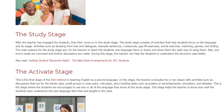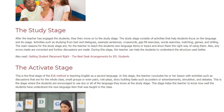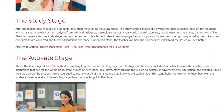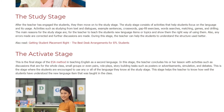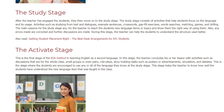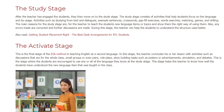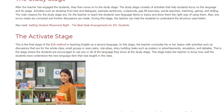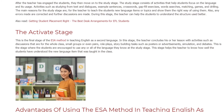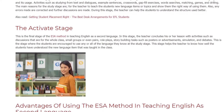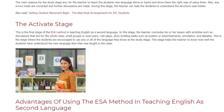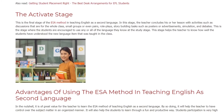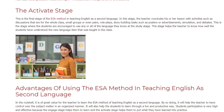During the Study stage, the teacher can help students understand the structure used better. The Activate stage is the final stage of the ESA method in teaching English as a second language. In this stage, the teacher concludes the lesson with activities such as discussions for the whole class, small groups, or pairs, role plays, story building, tasks such as posters or advertisements, simulation, and debates. This is the stage where students are encouraged to use any or all of the language they know. This stage helps the teacher know how well the students have understood the new language item that was taught in class.